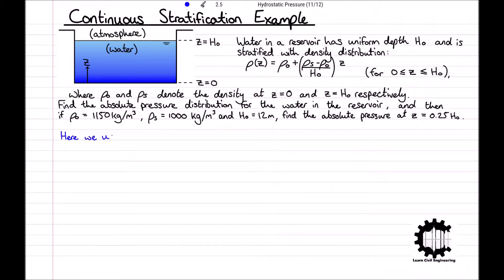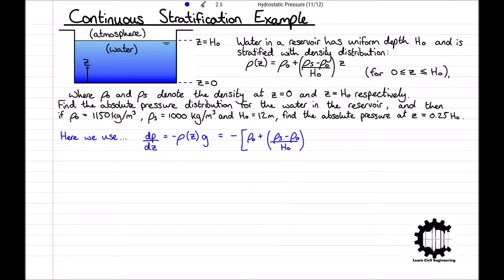We will use the equation for pressure distribution derived in a previous video, where dP by dZ equals minus rho with respect to height Z times by G. Substituting the density distribution defined above, we get that this is equal to minus rho 0 plus rho S minus rho 0 divided by H0 times by Z, all times by G. We will use the boundary condition P equals PA at Z equals H0.